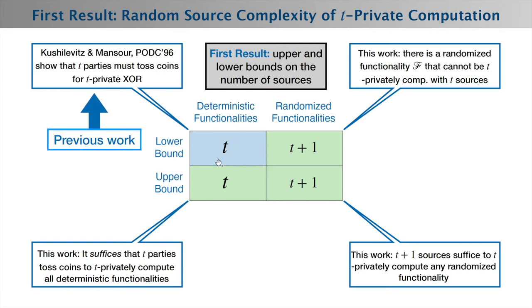Previous work showed that at least t random sources are needed for t-private computation. We show that t+1 parties are needed to compute a randomized functionality, and t+1 parties are sufficient. These turn out to be relatively easy, natural results. If t parties are corrupted, you need at least one uncorrupted party that can toss random coins, hence t+1.